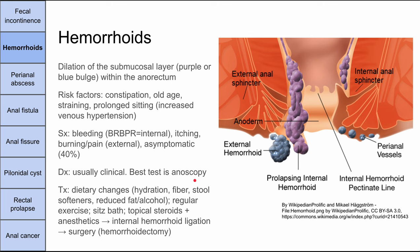There are many treatments for hemorrhoids across wide modalities. First, dietary changes: ensure the patient is hydrated, has plenty of fiber, and consider stool softeners to reduce constipation. Fat and alcohol can also cause constipation, so reducing those may help. Regular exercise can help with bowel movements. Sitz baths help with pain, and topical steroids and anesthetics might work as well. If that doesn't work, you can progress to internal hemorrhoid ligation, and if necessary, surgery — a hemorrhoidectomy.